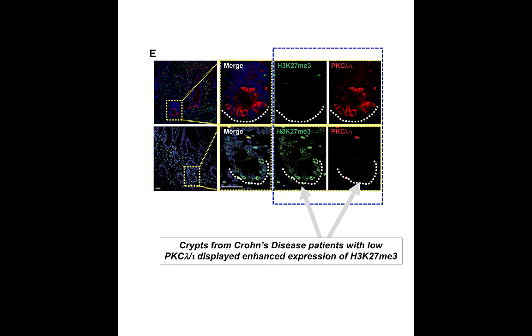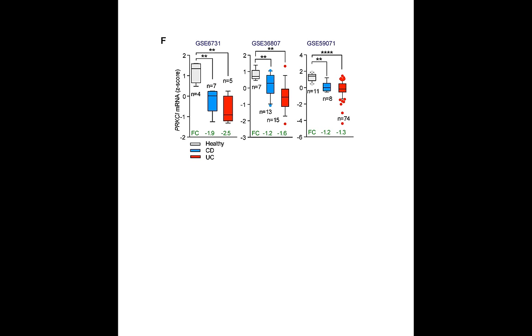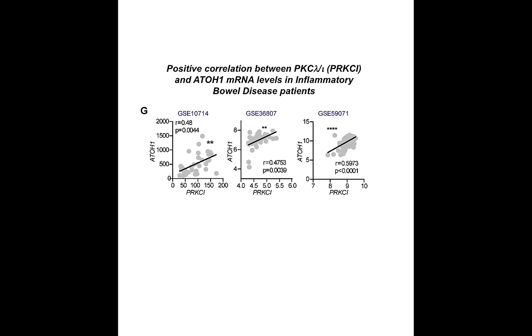To expand on these observations, we analyzed PKC iota mRNA expression in public gene data sets of Crohn's disease and ulcerative colitis. As shown in panel F, PKC iota expression was significantly down-regulated in these patients as compared to healthy controls. Furthermore, as shown in panel G, there was a significant positive correlation between PKC iota and SOX9 mRNA levels in inflammatory bowel disease samples, in agreement with a critical role for PKC iota in Paneth cell differentiation through the control of SOX9 expression.